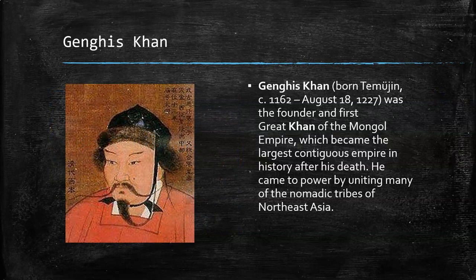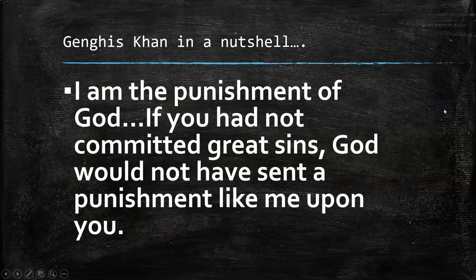Every great empire has a great leader. Genghis Khan was the unifier of the Mongol people. In fact, Genghis Khan is a title — he was born Temujin, which means king of kings. He was the mastermind that brought the Mongols together and made them realize their potential on a world level. A primary source reveals who he was: Genghis Khan quoted, 'I am the punishment of God. If you had not committed great sins, God would not have sent a punishment like me upon you.' He backed this up, no doubt.